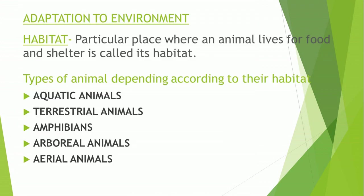Now first we will discuss animals' adaptation to environment. Children, you might have seen animals on land, in water, and even in air. You know that they have special features or body parts which make it possible for them to live in a particular place in a particular way. That particular place where an animal lives for food and shelter is called its habitat.